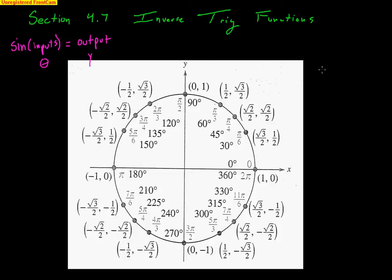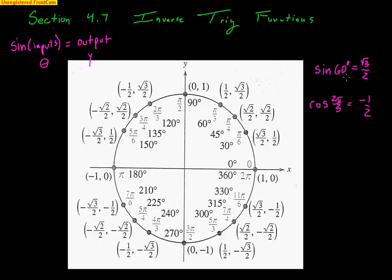For example, if I said sine of 60 degrees, I'm giving you the input of 60 degrees and you tell me the output: radical 3 over 2. Or, what is cosine of 2π over 3? That's the angle input, and the output is the x-coordinate — we get negative 1 half. The definition of a function is that every input has one output. The input of 60 degrees leads to one output only, radical 3 over 2. There's one answer, not two.